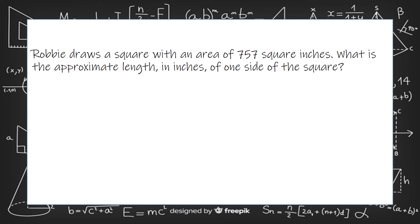Robbie draws a square with an area of 757 square inches. What is the approximate length in inches of one side of the square? So remember that a square, the area, is s squared, the side length squared. So we know that 757 equals the side squared.